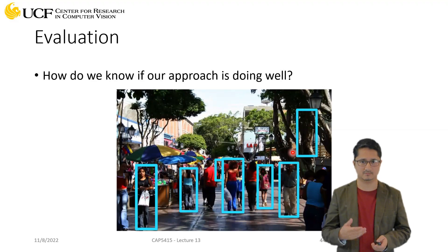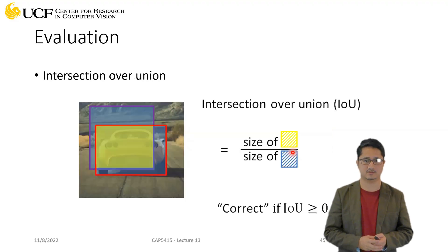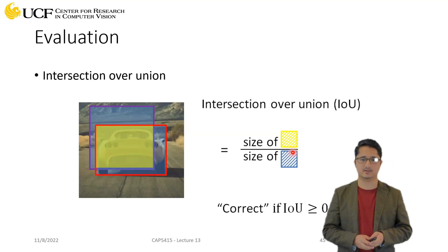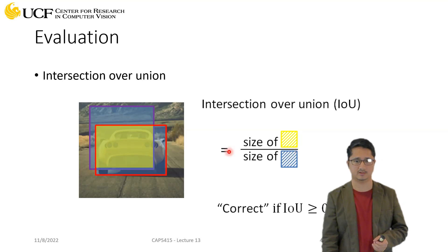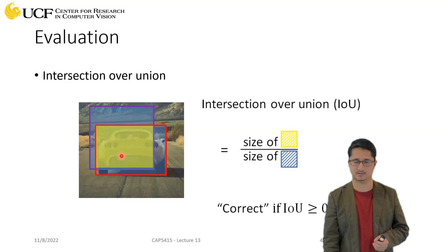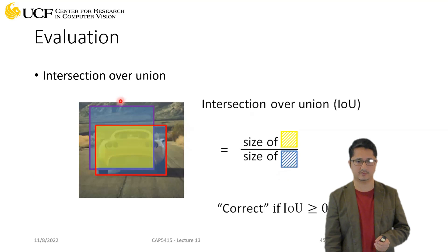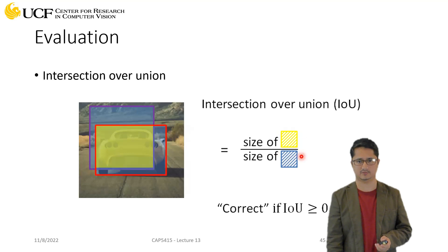Let's discuss how exactly we can get that number. First, a quick recap of intersection over union, which we saw earlier. You have two different bounding boxes — the yellow one is the intersection which goes in the numerator, and the blue one is the union, which is all the area these two bounding boxes are covering. We just compute the ratio of these two.